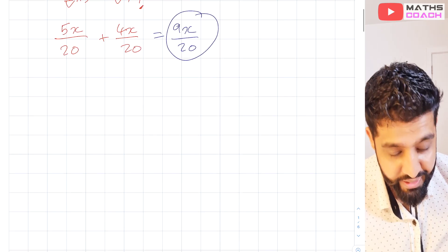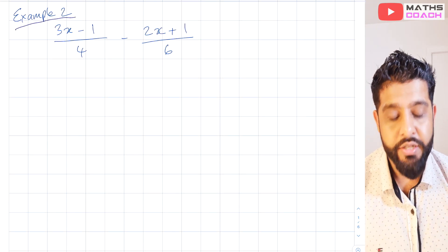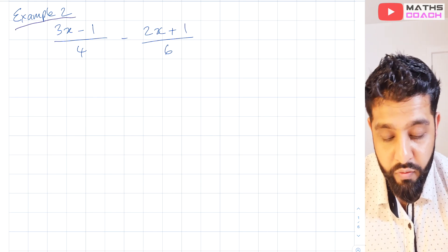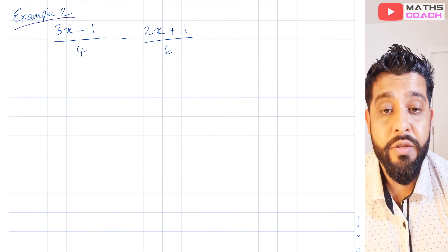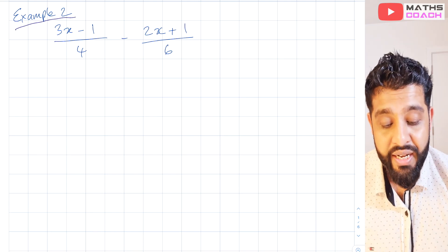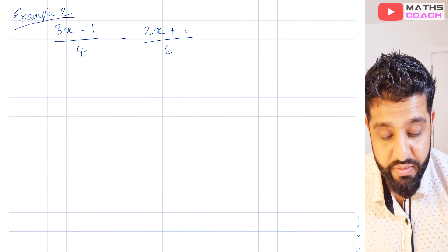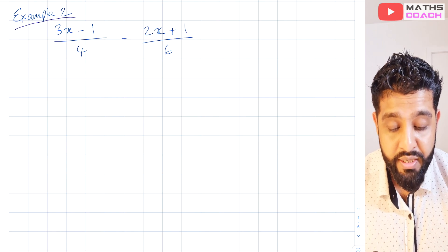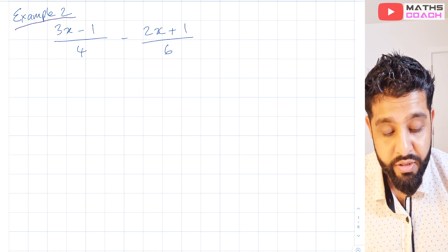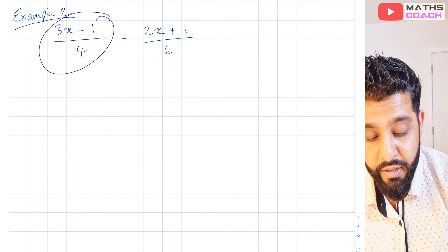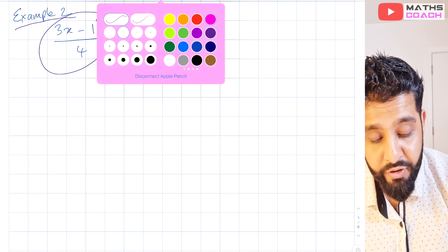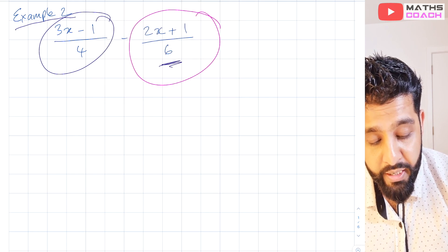Let's move on to the next example. In this one we are looking at subtraction: we've got (3x minus 1) over 4 minus (2x plus 1) over 6. Once again we can look at the lowest common multiple of both denominators, and you can see that 12 works, or we can multiply the first fraction by 6 and the second fraction by 4.